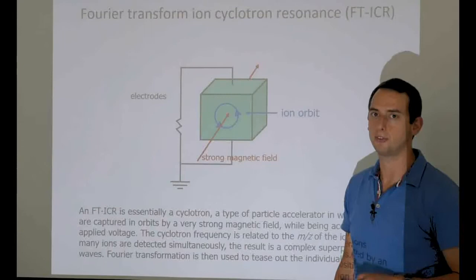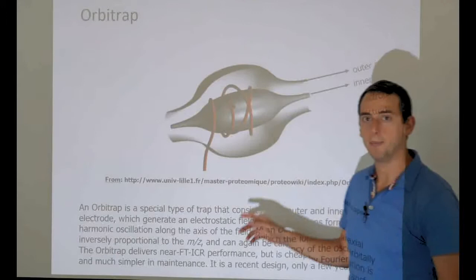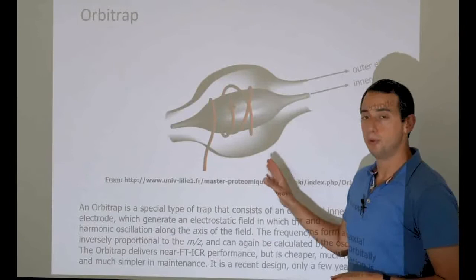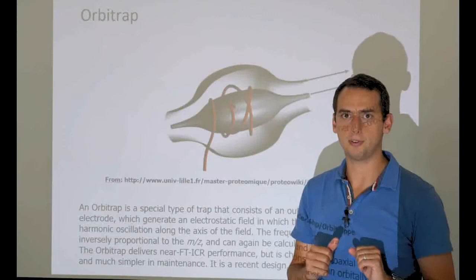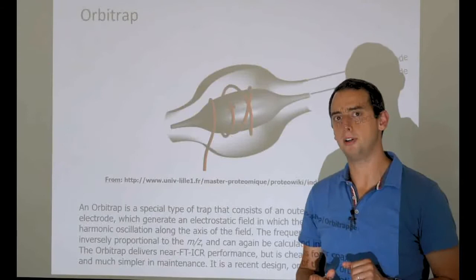Now we can introduce the Orbitrap. The Orbitrap was invented by Makarov and it's a very recent invention. It's a beautiful design that is very simple, yet it achieves very much the same kind of resolution as a simple Fourier transform ion cyclotron resonance instrument. It's not as good as a top-of-the-line Fourier transform, but it can approximate them very closely.